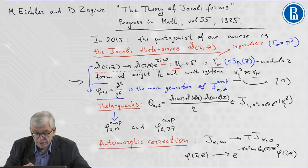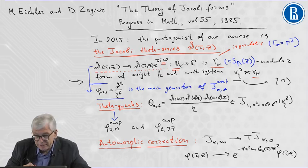This is the main generator of the graded ring of weak Jacobi forms. The formula is very simple. We take the square of Jacobi Theta series over the six powers of the Dedekind eta function.